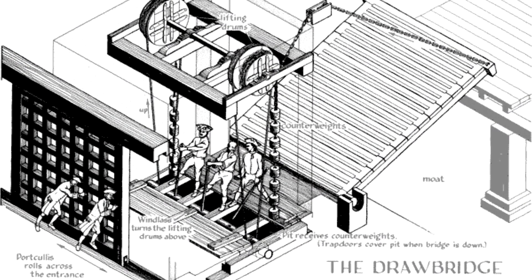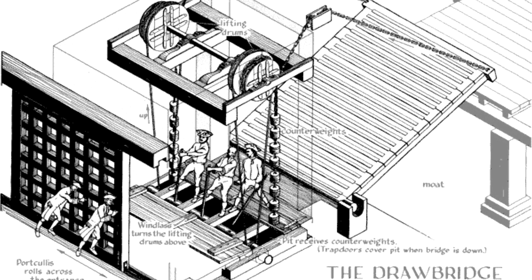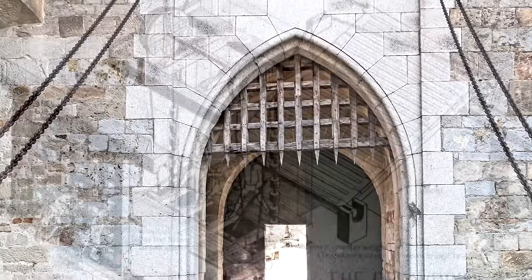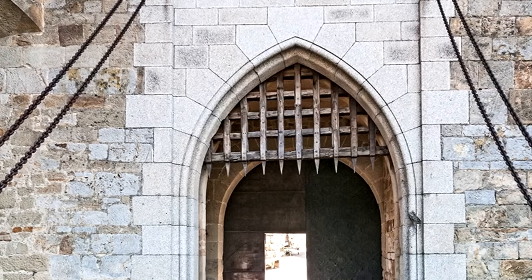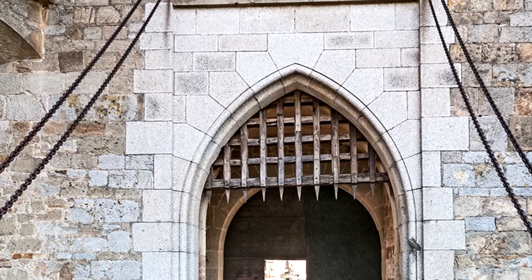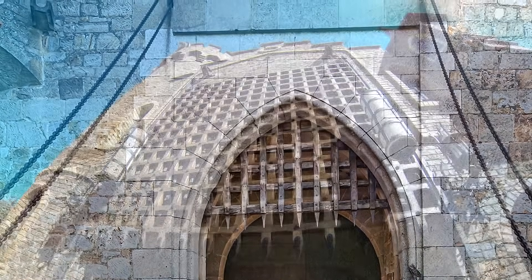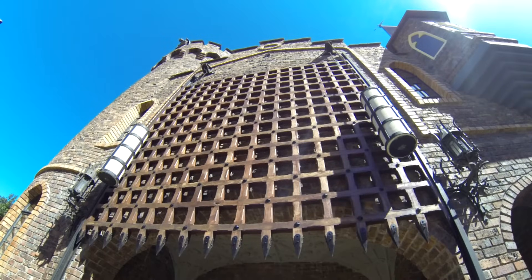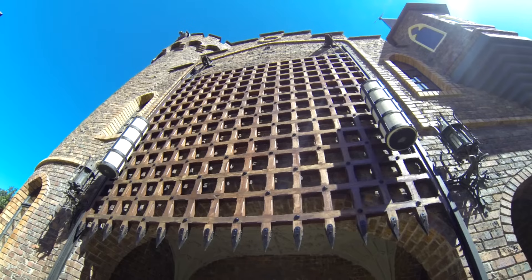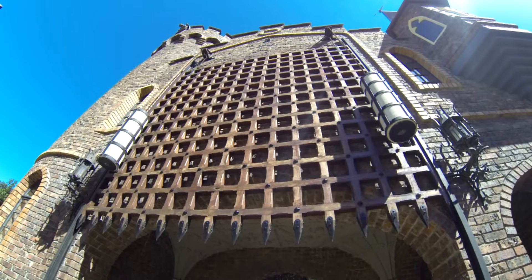Overall it was easier to operate and required less manpower, though it would take a little longer to lower again as the counterweight would have to be pulled up. The counterweight might also be incorporated into another defensive feature, such as using a portcullis as the counterweight, so when it was dropped, the drawbridge would go up as well, activating two lines of defense at the same time.